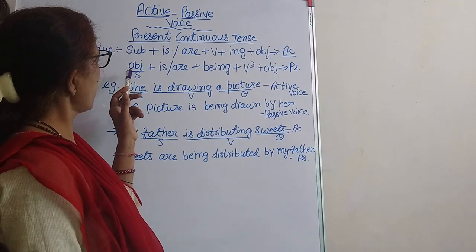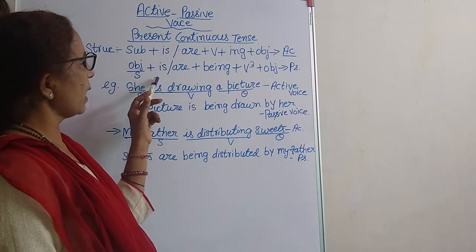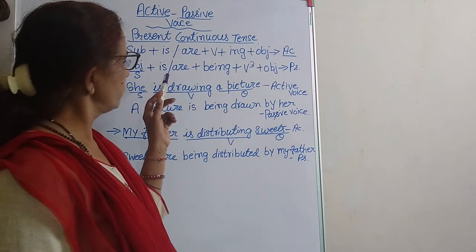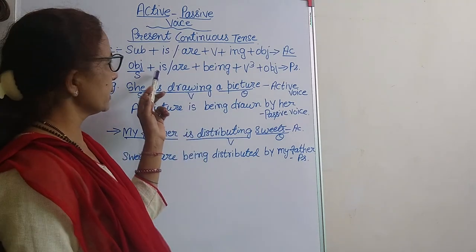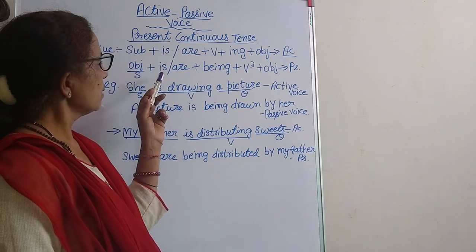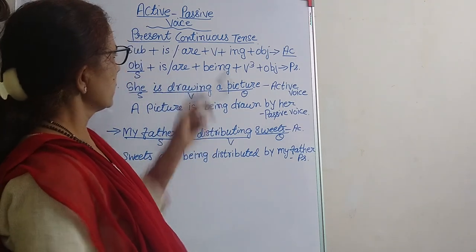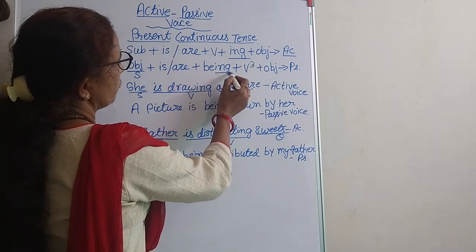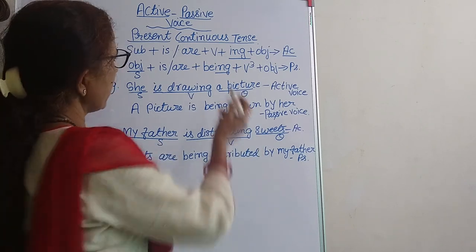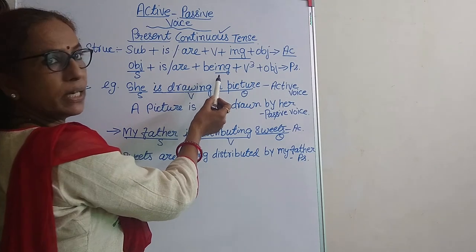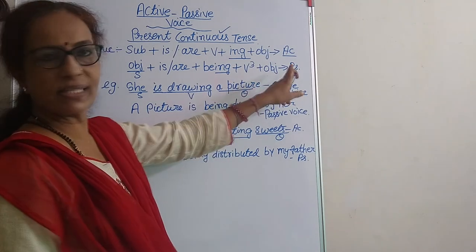And what will be the passive structure? The object becomes the subject. Then 'is' or 'are' — sometimes the subject could be singular but the object is plural, so in the passive you have to use 'are'. Then 'being' — this 'ing' from the active voice is carried forward as 'being'. Very important: in continuous tense we have 'being' plus verb 3. And then the object completes the passive structure.